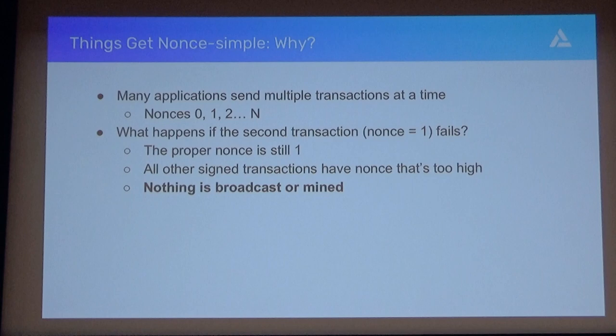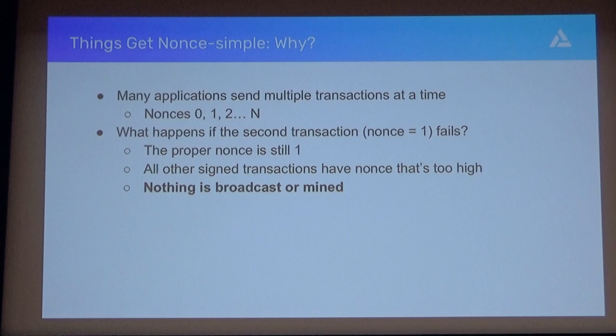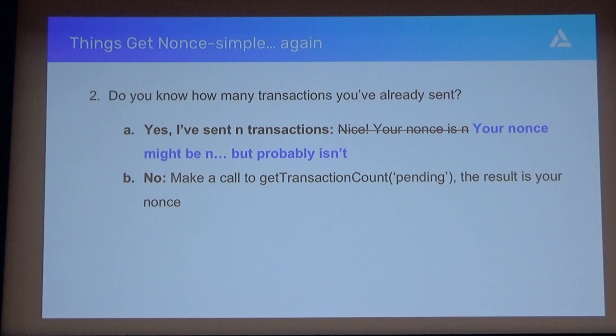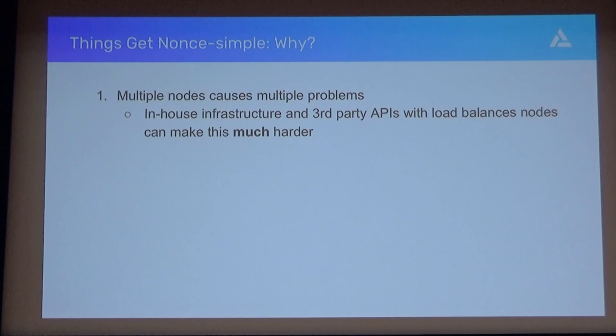What counts as a transaction failure? There are a couple of ways this can happen—some that are outright failures, some that are not. The most common way is that one of a bunch of transactions won't have a high enough gas price, so it can never get broadcast. So failure in this case means failure to be properly broadcast and mined, or in some cases more outright failures. As you remember from the algorithm earlier, you have a backup plan: you can call getTransactionCount pending. But this also fails a huge chunk of the time for a completely different reason.